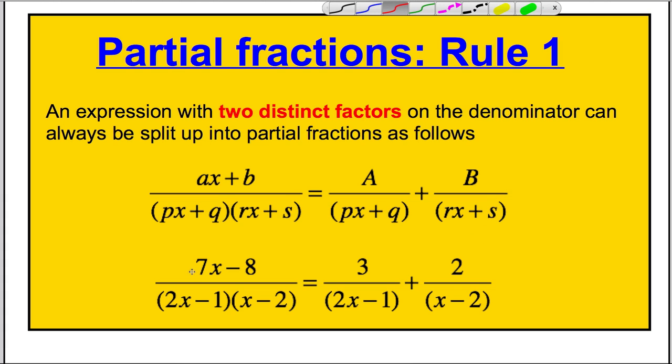For example, 7x subtract 8 over (2x minus 1)(x minus 2) actually turns out to be 3 over 2x minus 1, a number over the first factor, and another number over the second factor. One very important thing to notice: this is only true when the order of the top is smaller than the order of the bottom. The order means the highest x power on top - at most we have x to the power of 1, and on the bottom if we were to multiply out we've got a quadratic. So the bottom has a higher order than the top. This rule only works in those scenarios.